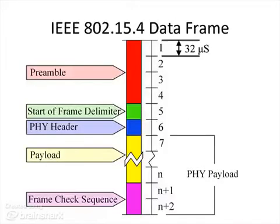This is the 802.15.4 data frame as transmitted over the air. The numbers to the right indicate the byte, so the first one starts at the preamble in red at the top as byte number one. Each byte takes 32 microseconds to transmit at the 250 kilobit per second rate. It starts with six bytes of basically the preamble and start frame delimiter, which is how the radio synchronizes to the frame. The sixth byte is the PHY header, which indicates how many bytes are to follow, letting the radio know how long it should remain on to receive. Then you have the payload itself, followed by a frame check sequence, which is used to ensure no corruption occurred.